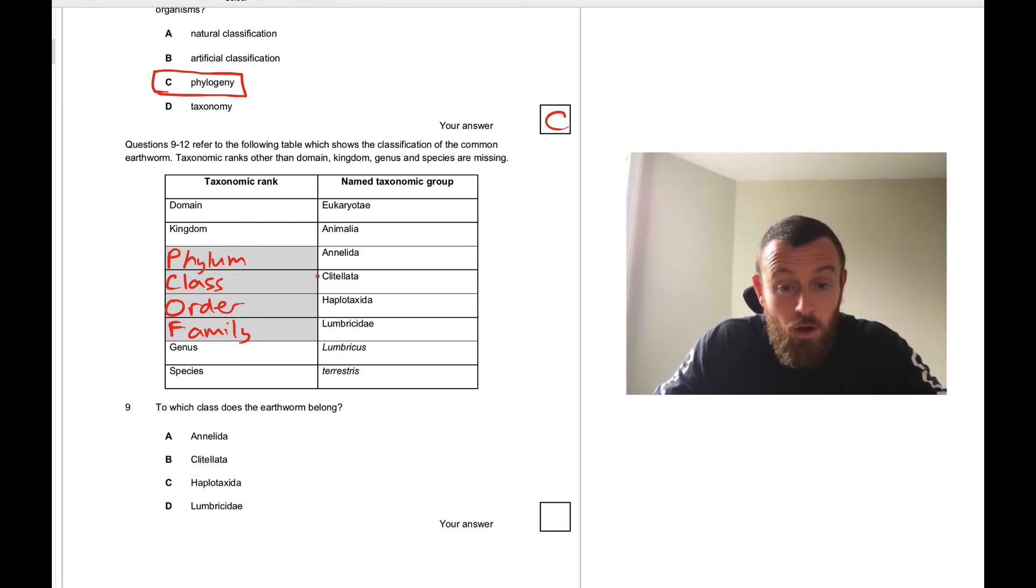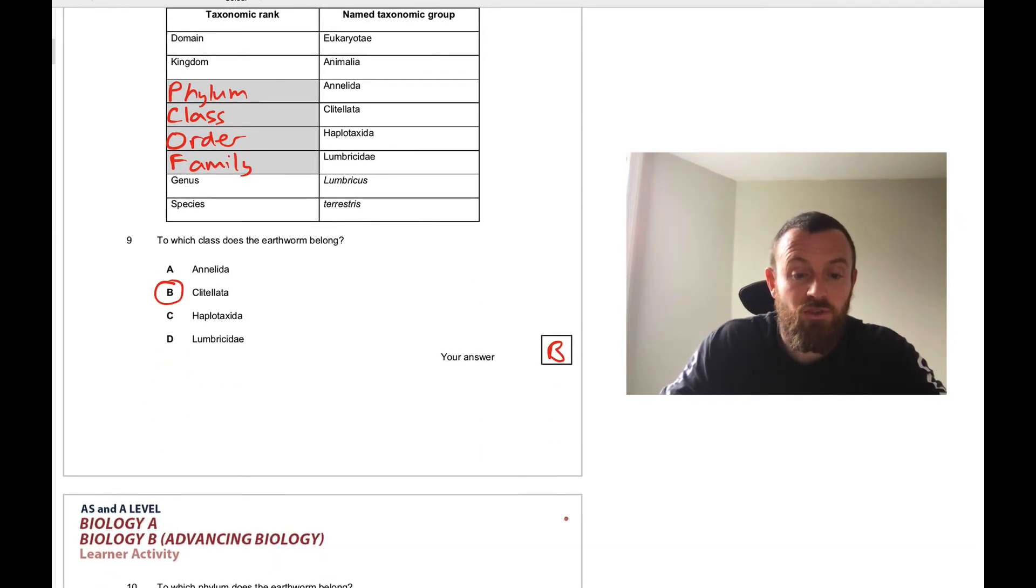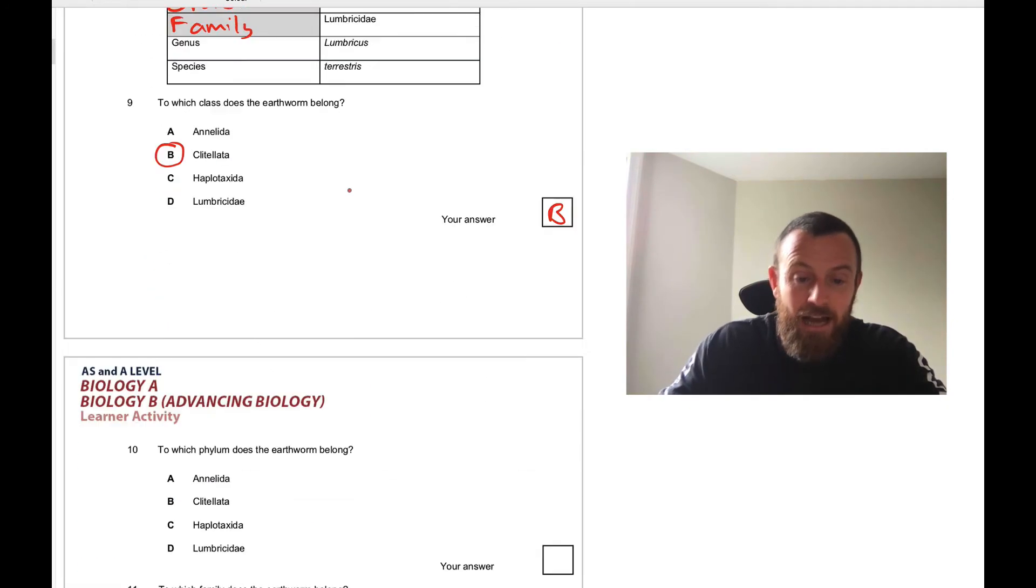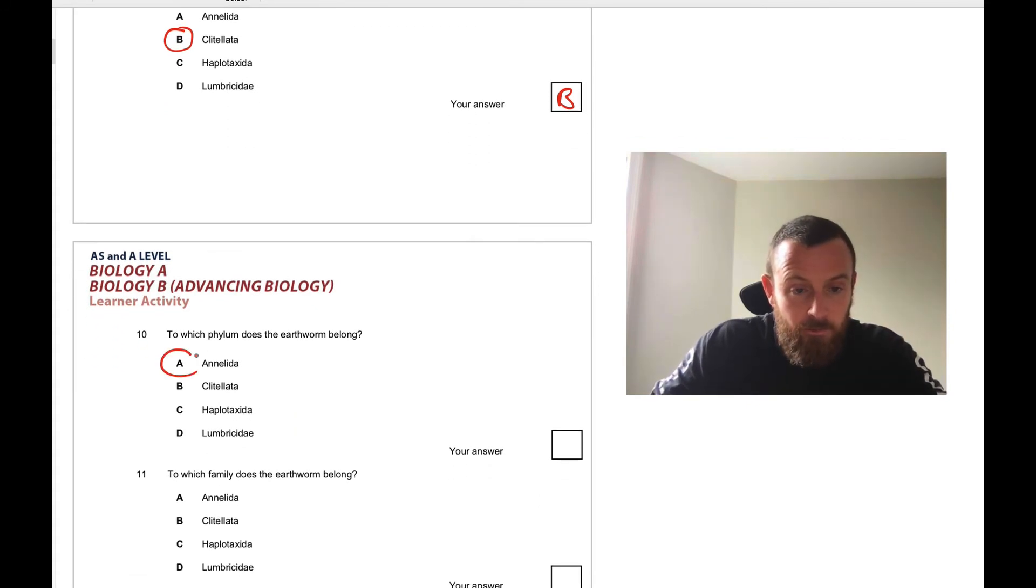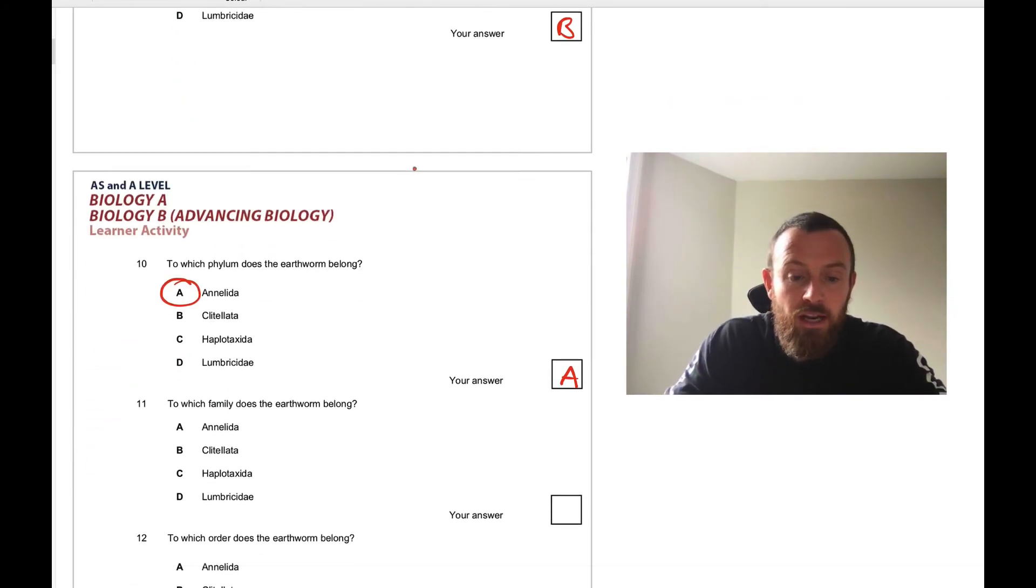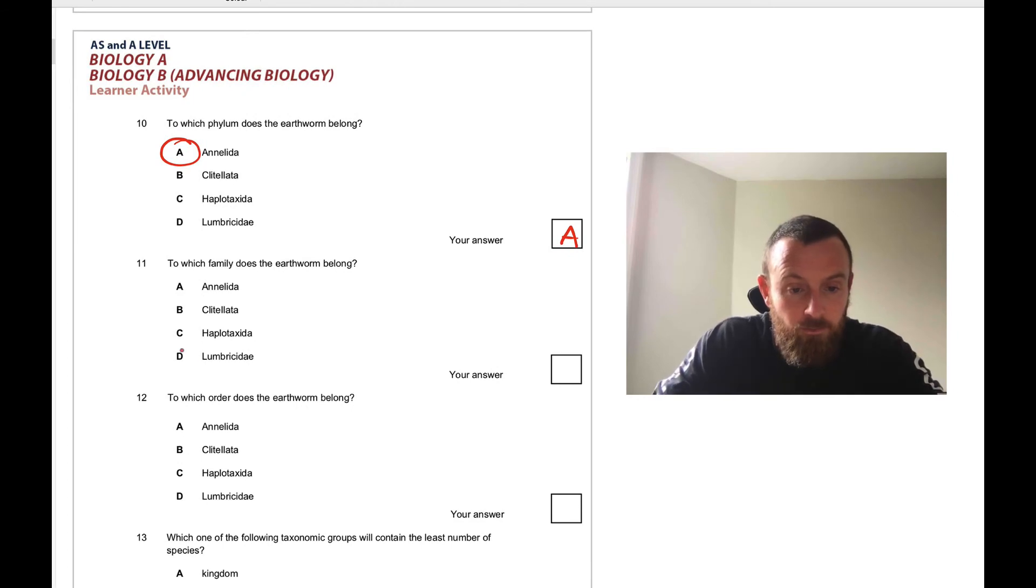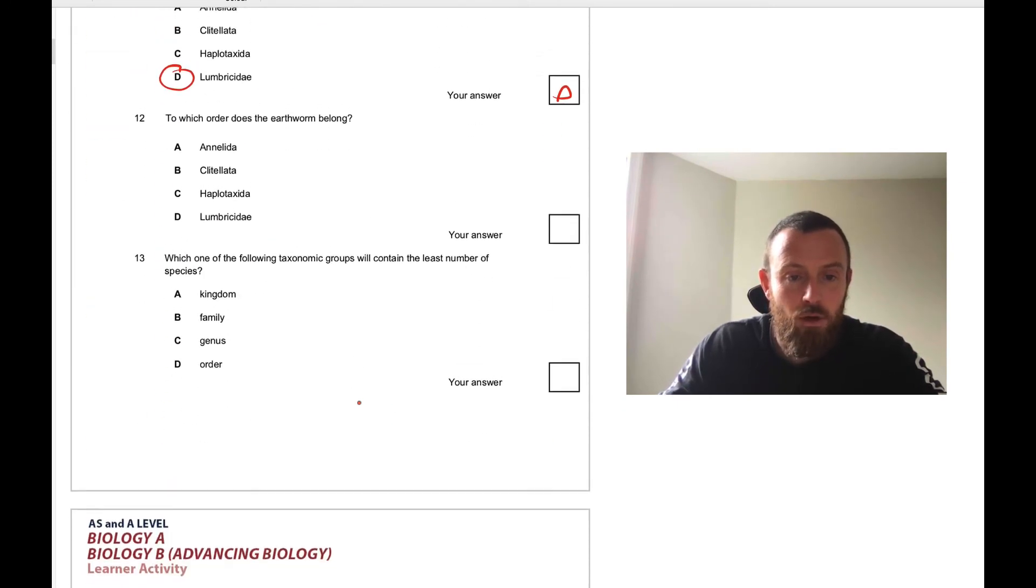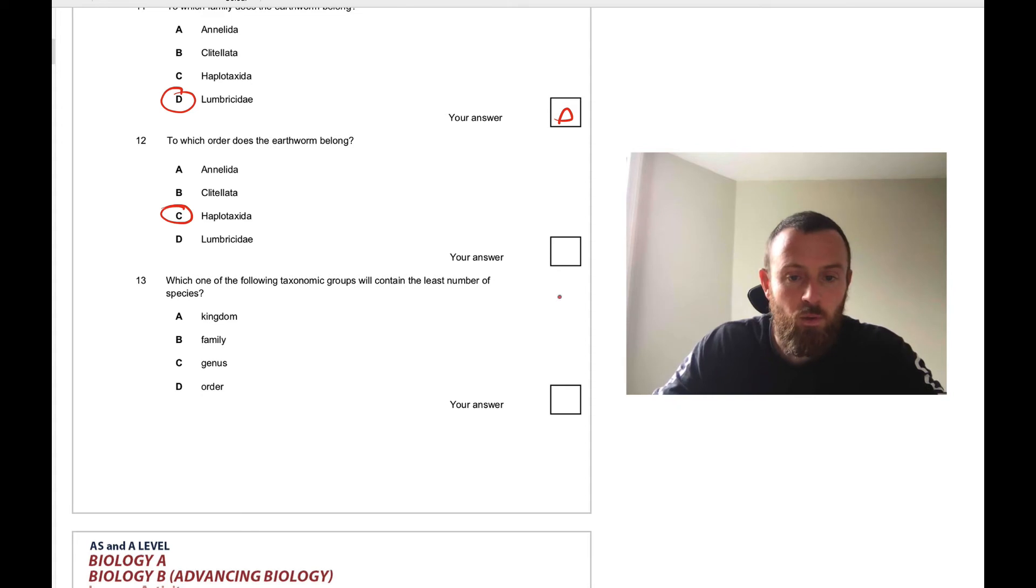To which class does the earthworm belong? That's Clitellata, answer B. Number 10, to which phylum does the earthworm belong? I have to go back up here, it's the Annelida, so therefore the answer is A. 11, to which family does the earthworm belong? Well that's Lumbricidae, so D. And to which order does the earthworm belong? Going back up, it is Haplotaxida. Tricky words to say here.